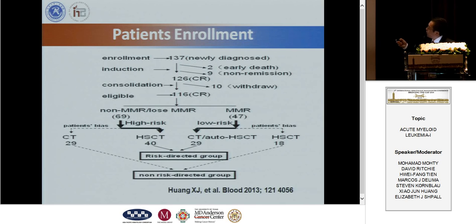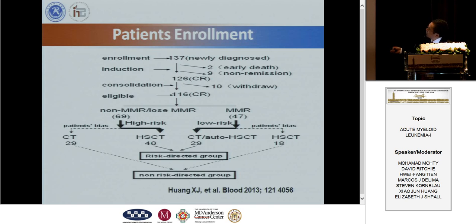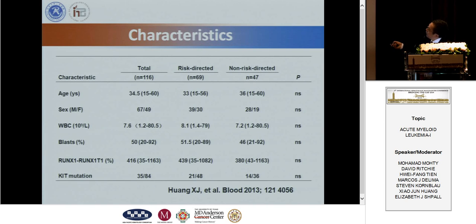This is the patient flow. In total, 137 newly diagnosed patients were enrolled, and 122 patients achieved CR. Of these, 69 patients were classified as high-risk. Among low-risk patients, 29 received chemotherapy and 40 received transplantation — some low-risk patients chose transplantation due to having an HLA-identical donor.